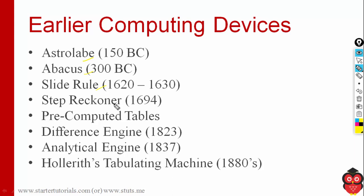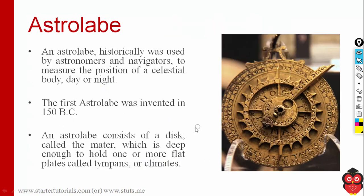We have abacus, slide rule, step reckoner, and they also used pre-computed data values in the form of tables. There is a difference engine, analytical engine, and Hollerith's tabulating machine. Let's look at each one of them.